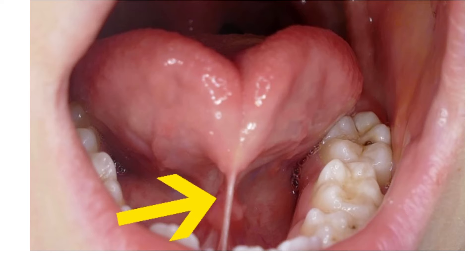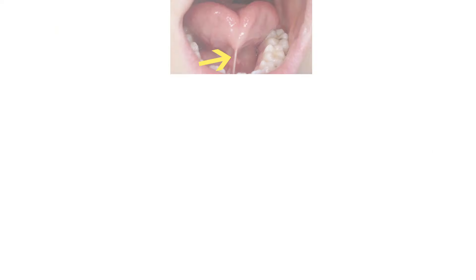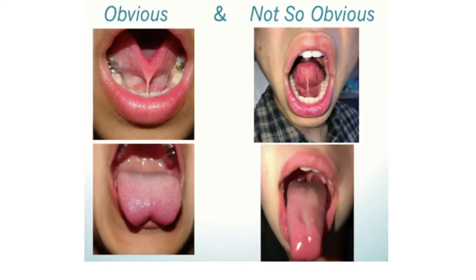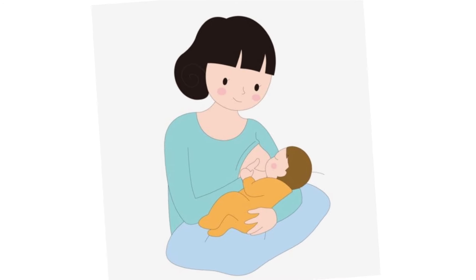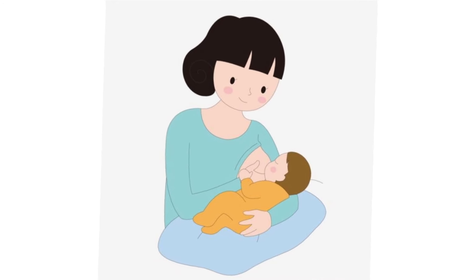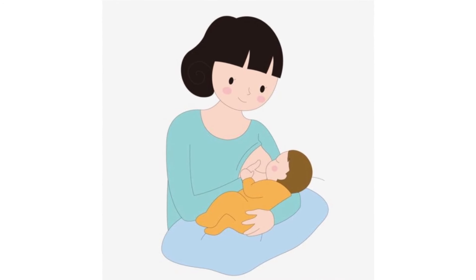Because of this tight band, there is inability to protrude the tongue and there is reduced mobility of the tongue. There are also chances of difficulty in feeding and breastfeeding.